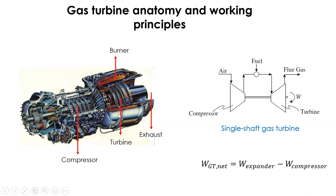On the left-hand side of the slide, you see the basic illustration of how a single shaft gas turbine works. In a single shaft gas turbine, the compressor and turbine are mechanically connected and they both rotate at the same speed.